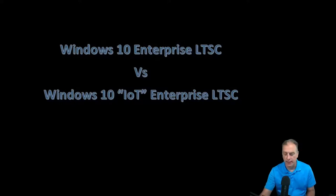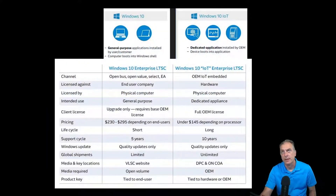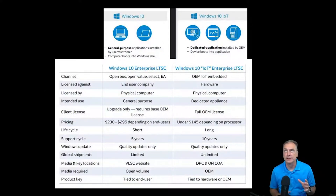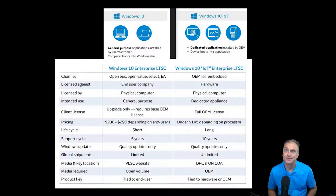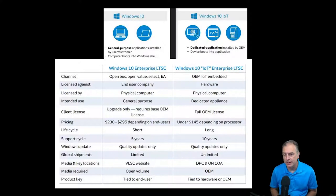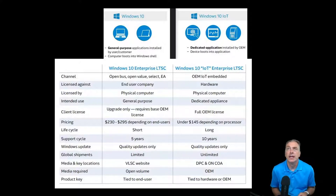We're going to compare them side by side and see what the difference is. So if we start in the upper left, you'll see that it's talking about general purpose computers, and then on the right you have dedicated appliances. That's where we start. Depending on how you're going to be using the product — is it going to be a general use computer, or is it going to be a dedicated appliance?